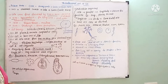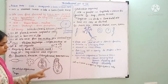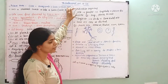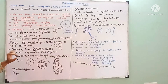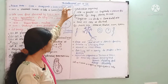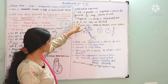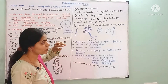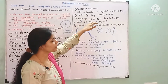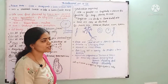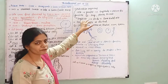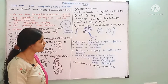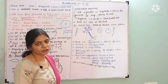Next are multicellular organisms. 'Multi' means many, so the body is made up of many cells. Different cells divide and group together to form the body, carrying out different functions. Examples include fungi, plants, and animals.